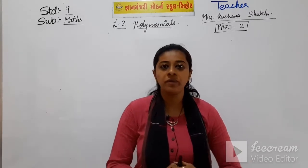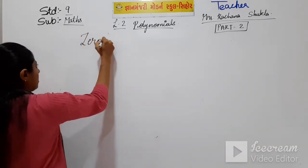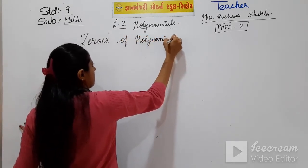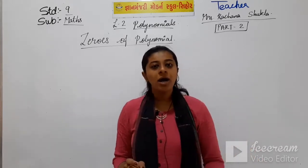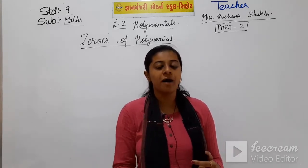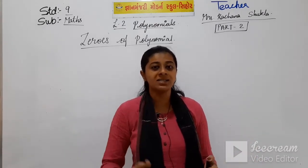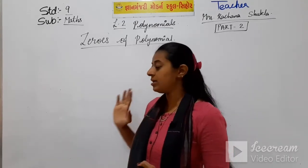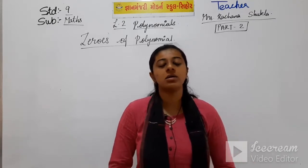In today's session we will learn another topic: zeros of polynomial. That means a polynomial will be given and you have to put values of the variable — values of x, y, or a, b, c — and you have to find the answer as 0. That is known as zeros of polynomial. Let's see through examples whether we are getting 0 as the answer or not.